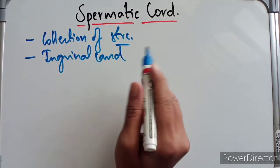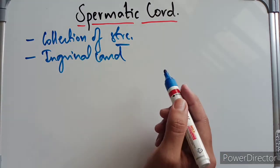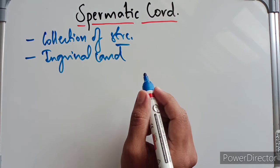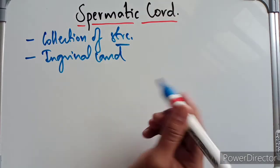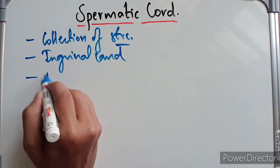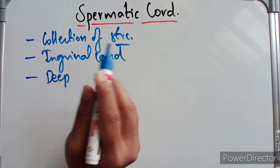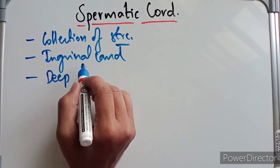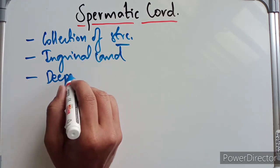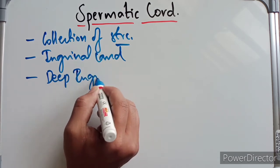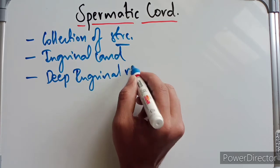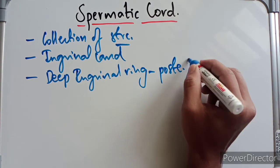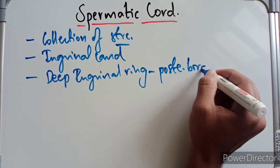The inguinal canal — its boundaries and contents I have discussed in another video, please make sure to watch that. The spermatic cord extends from the deep inguinal ring — we have two inguinal rings, deep and superficial, discussed in the inguinal canal video — and it descends to the posterior border of the testis.